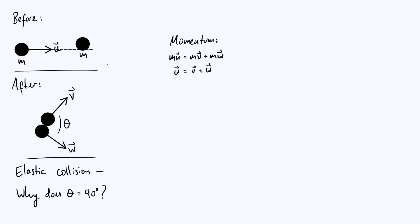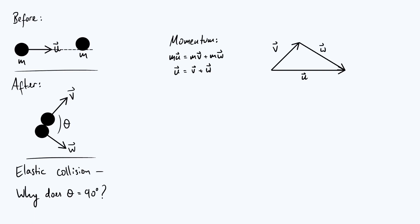What does that mean geometrically? Let's draw a little vector diagram. There's the u vector, and v is pointing up and to the right. If u equals v plus w, then w must close the gap between v and u — it goes from the head of the v arrow to the head of the u arrow. Moving along u is equivalent to first moving along v and then moving along w, which is how vector addition works geometrically: put vectors head to tail and the result goes from the tail of the first to the head of the second. So the key point is that u, v, and w form a closed vector triangle.